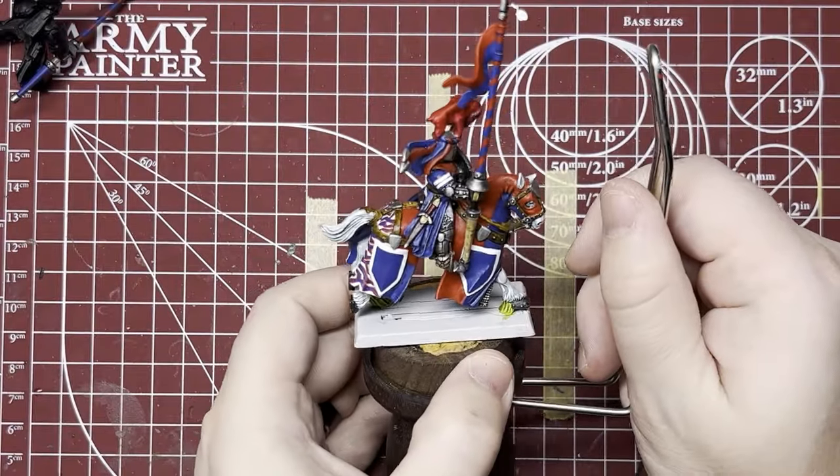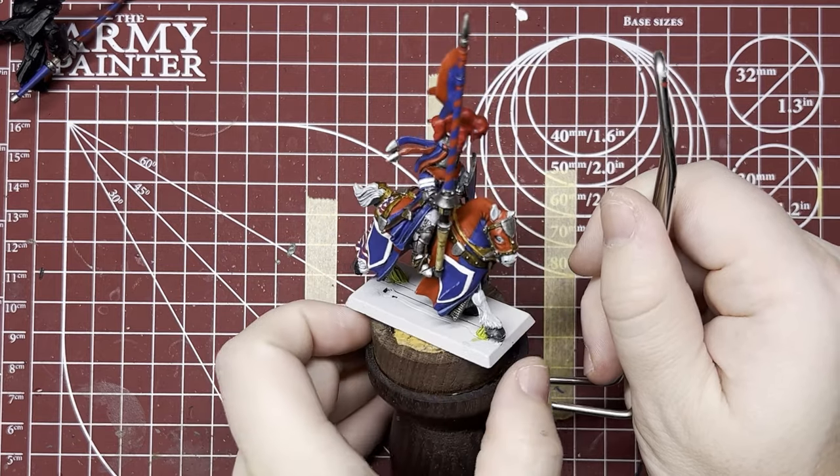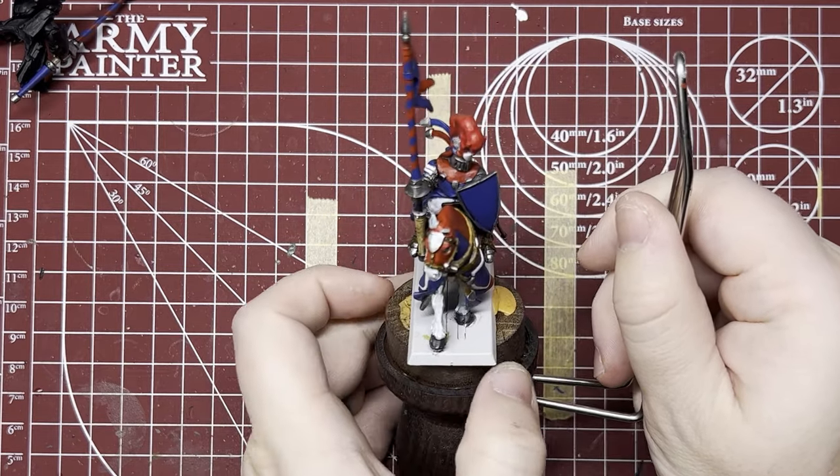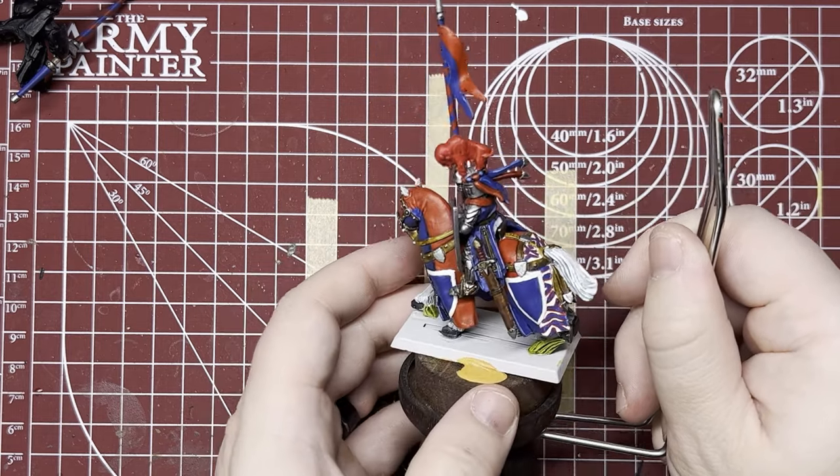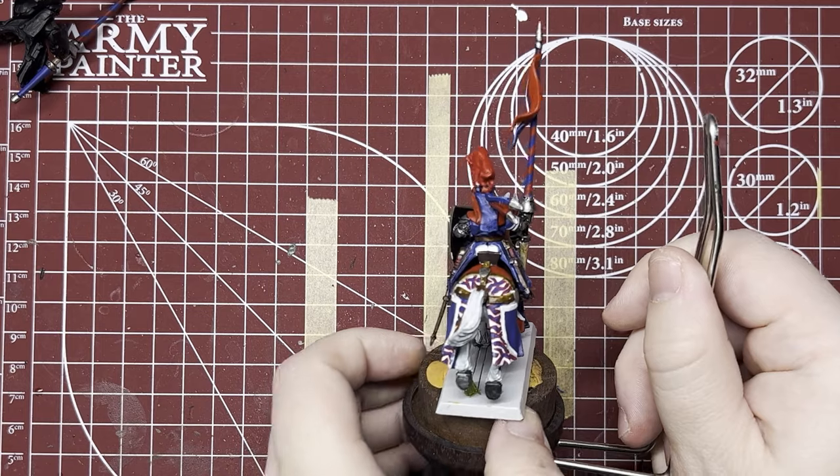And here's a little teaser of my in-progress Buffalo Bills Knight project. I hope this tip helped. Follow the channel for more little tips like this to help make your Bretonnians the best they can be. Thanks for watching.